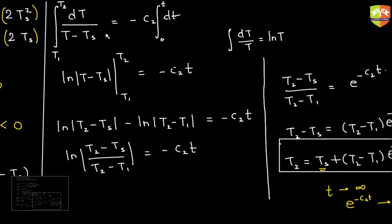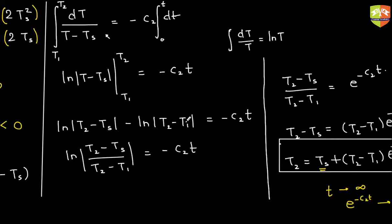When t equals zero, e^(−C2·t) equals 1, so T2 equals TS plus (T1 - TS), giving T2 equals T1 — which confirms our assumption that at t = 0 the temperature is T1.